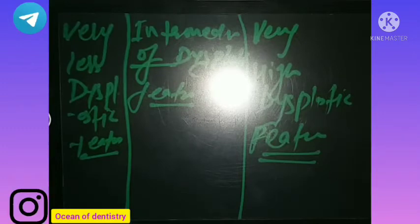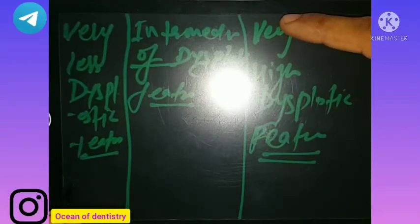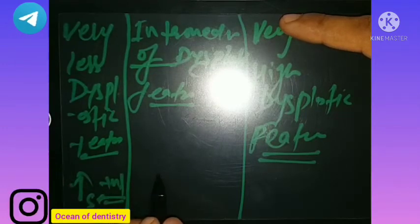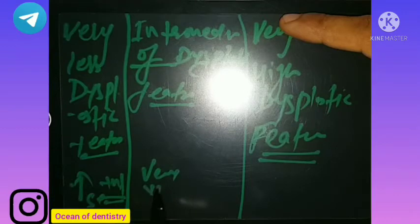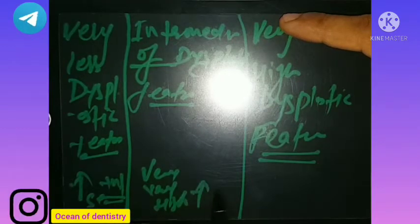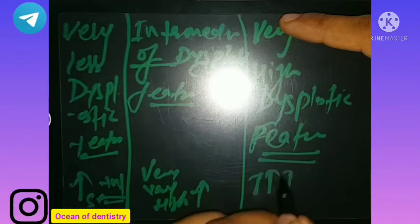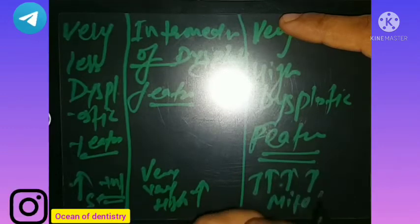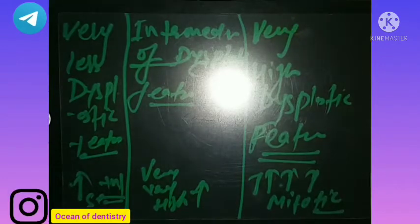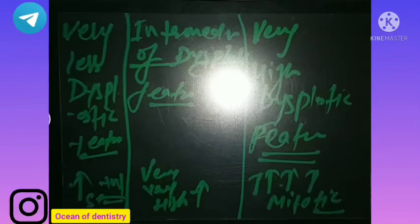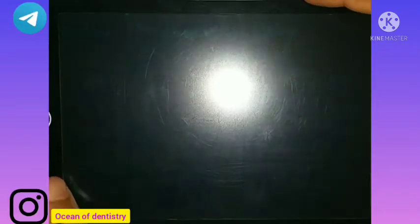Now regarding mitotic figures — the number of cell divisions. In the well differentiated type, mitotic figures are present but less. In the intermediate type, there are very high mitotic figures. In the poorly differentiated, the mitotic figure count is very much high, meaning the number of cell divisions in poorly differentiated squamous cell carcinoma is very high.